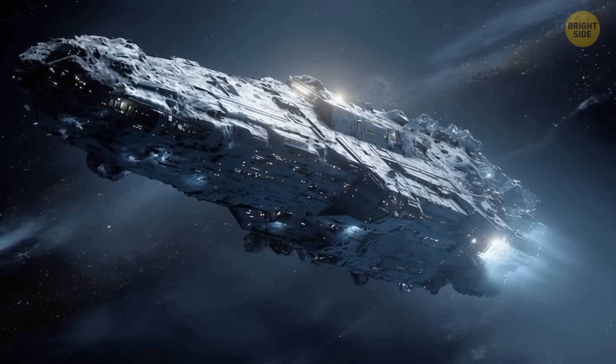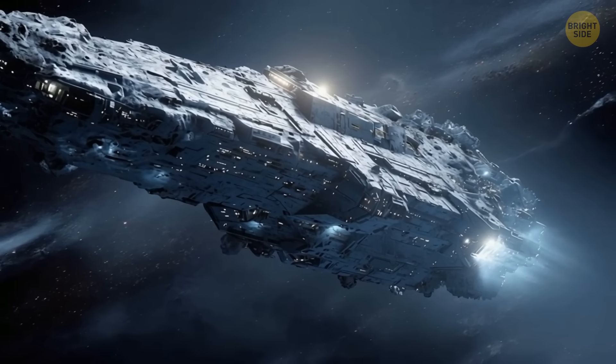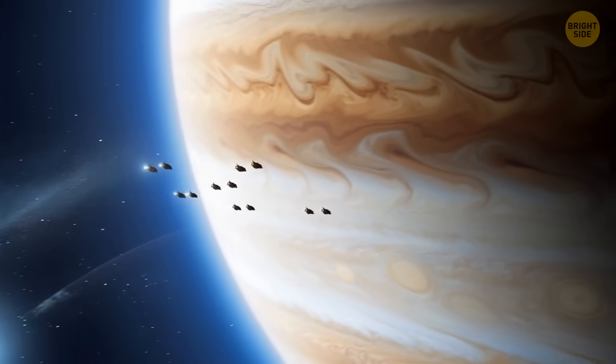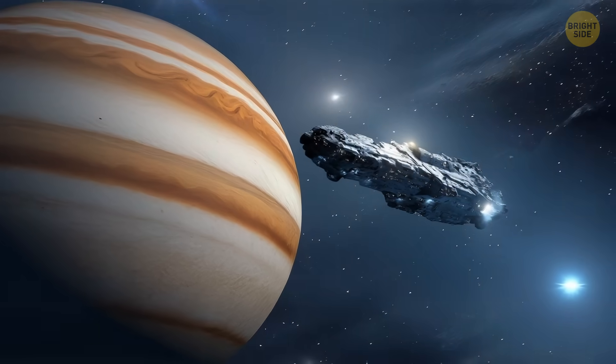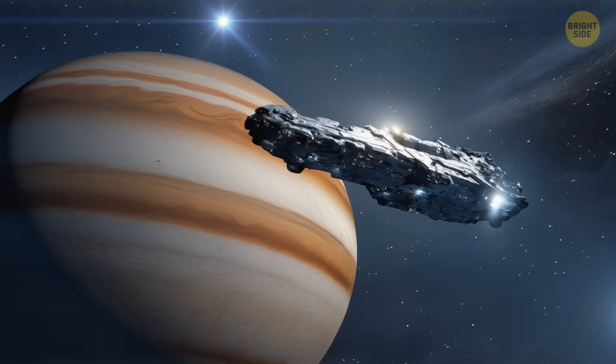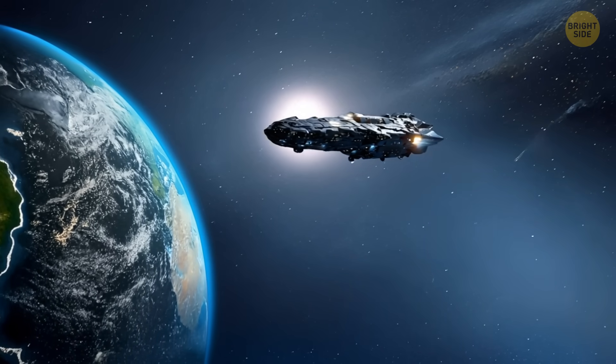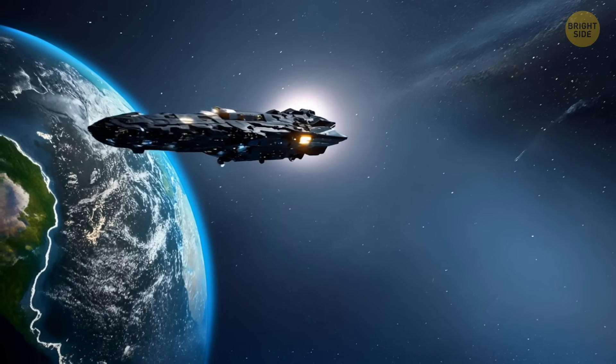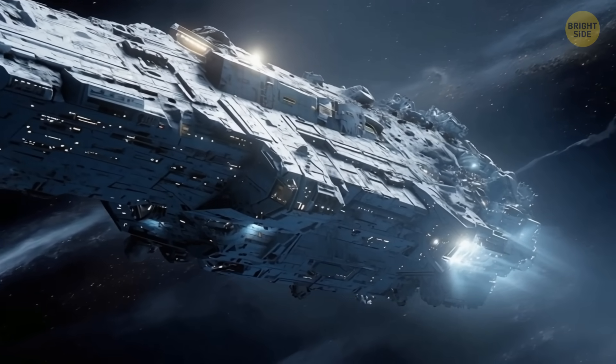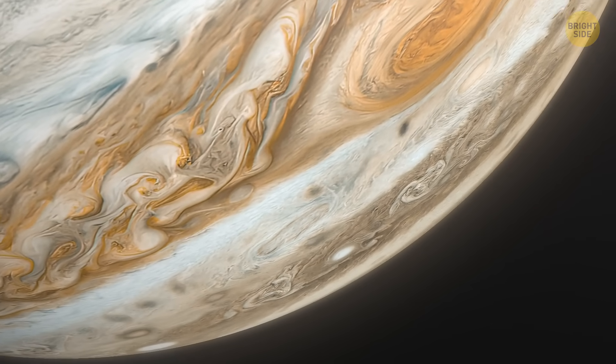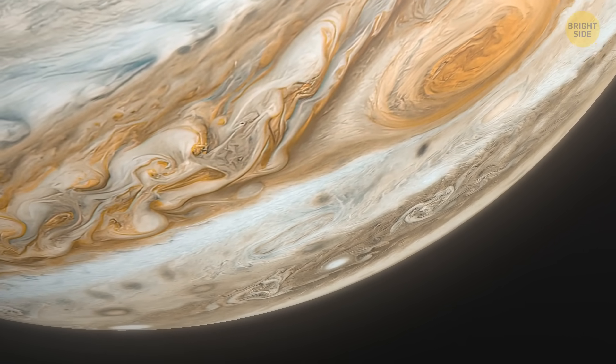According to this theory, 3i Atlas might be a massive extraterrestrial mothership. Its odd trajectory could mean it's sending out little satellites toward Jupiter to collect intel for some extraterrestrial civilization. So, in that version of the story, this isn't just a comet. It's basically advanced space spy tech. But then the obvious question is, why spy on Jupiter, right? I mean, wouldn't Earth be way more interesting to an interstellar civilization?